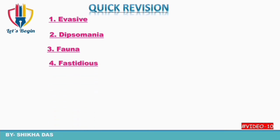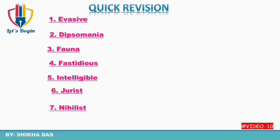Fastidious — jisko please karna mushkil ho, jo sab perfect chahta ho. Intelligible — jo asani se samajh mein aa sake. Jurist — law ke baare mein achhi jankari rakhne wala. Nihilist — jo life ki existence ko nahi maanta. Prototype — pehla model, namuna ya pratik. Sycophant — chaploos, flatter karne wala.